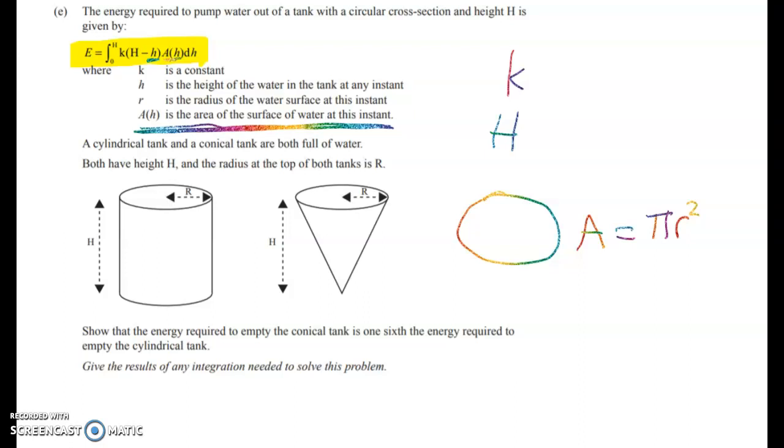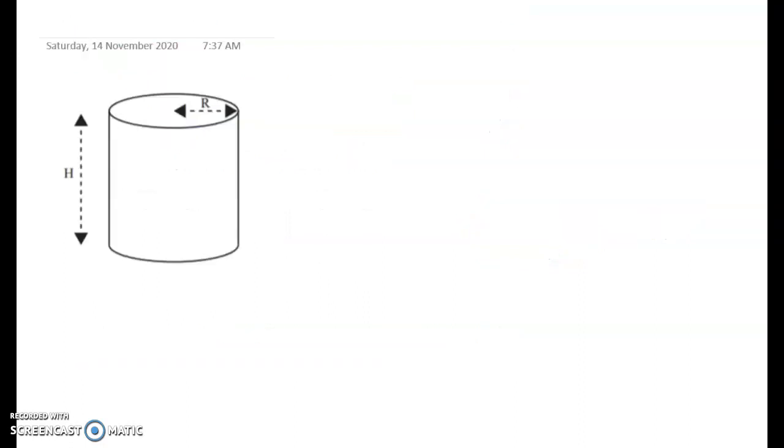So in the first tank situation we've got a cylinder. And the surface area for the cylinder doesn't change as the tank empties out. So the surface area for this one here is going to be A equals pi times big R squared which is a constant.